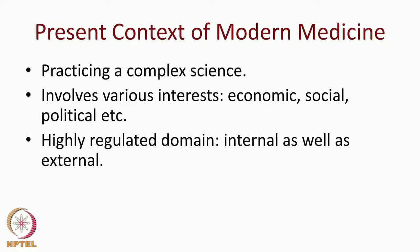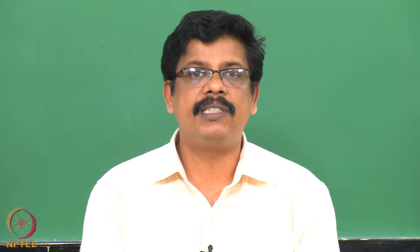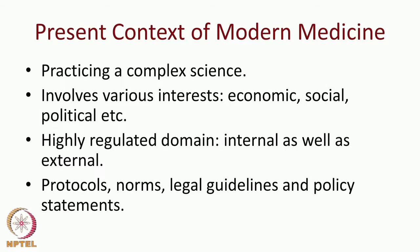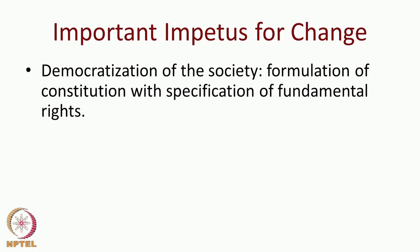Though modern medicine is a universal science, the practice is a highly regulated domain. There are internal regulations — medical bodies prescribe certain norms and standards — and external governmental regulations. So the autonomy which medical professional communities employ is to some extent limited. There are protocols, legal guidelines, and policy statements of hospitals, societies, and countries which are legally binding.